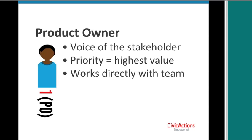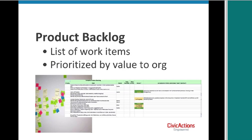The work the team is addressing is listed in something called the product backlog — basically a list of work items prioritized by value to the organization. The product backlog is constantly being reprioritized. One of the jobs of the product owner is to understand the landscape the organization is in and what changes are happening, because things rise or fall in importance based on that landscape.